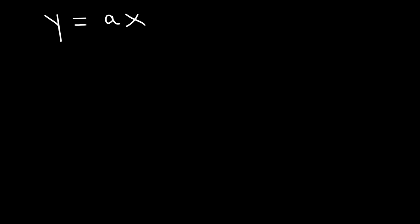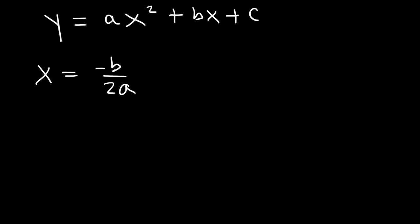In this video we're going to focus on finding the vertex of a parabola of a quadratic equation given in standard form, vertex form, and factored form. Standard form is y = ax² + bx + c. To find the vertex, use the formula x = -b/2a to get the x-coordinate, then plug that back into the original equation to get the y-value.